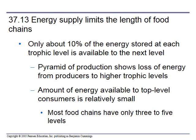Energy supply limits the length of food chains, because you lose energy every time you go up. We can't have chains going up 10 or 20 times, because only about 10% of the energy stored at each level is available to the next level — the rest is lost. A pyramid of production shows the loss of energy from producers to the higher trophic levels, with the amount of energy available to top-level consumers being relatively small. Most food chains only have three to five levels.